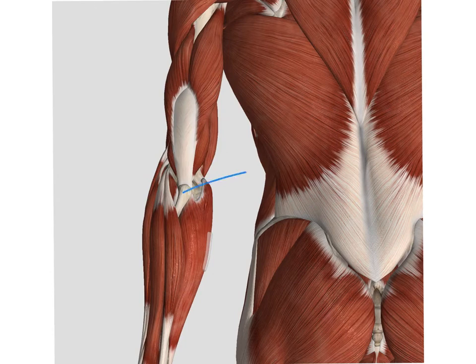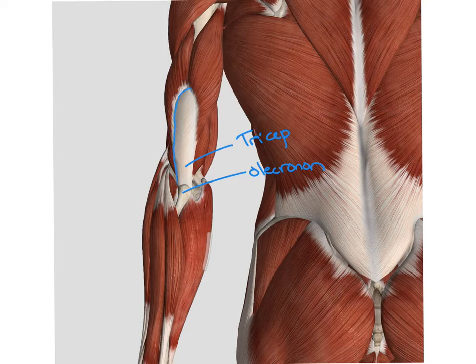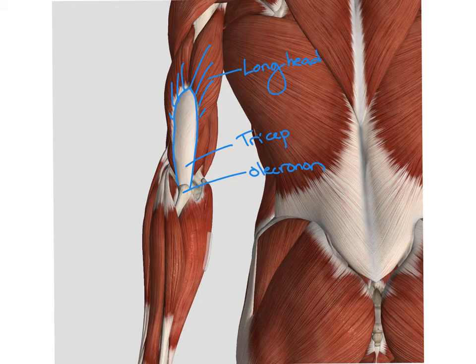Moving to the posterior side, we can tell that we're on the posterior side because we can find the olecranon process. Superior to the olecranon process, we have our tricep, which is a bipennate muscle. So we see our tricep tendon coming down to the middle and then we have fibers running to both the medial and the lateral side. In the tricep, we name our heads a little bit differently than in the biceps. So we have our long head on the medial side and then we have our lateral head on the lateral side.